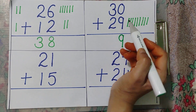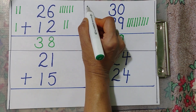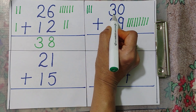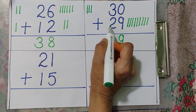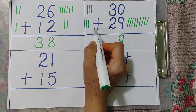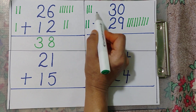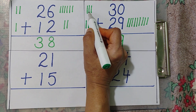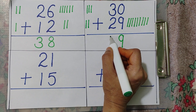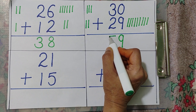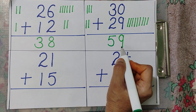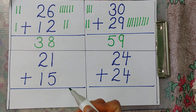Tens: three plus two. Three lines — one, two, three. And two lines — one, two. Total: one, two, three, four, five. Answer is fifty-nine.